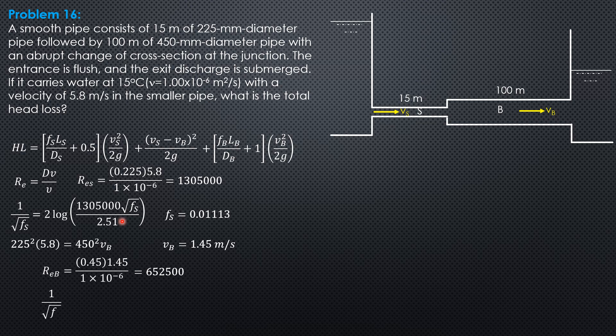Substitute into this formula, 1 over square root of Fb equals 2 log of quantity 652,500 square root of Fb over 2.51. Solving for Fb, Fb is 0.01254, using the calculator.